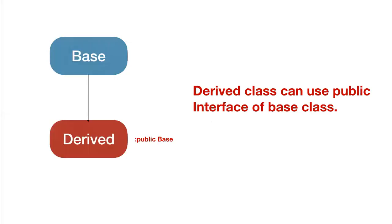Welcome back to the C++ type casting series. Today we will see upcasting and downcasting. So what is upcasting and downcasting? First we have to consider inheritance, in which we have a base class and a derived class. The derived class is publicly inherited from the base class, so the derived class can use the public interface of the base class.